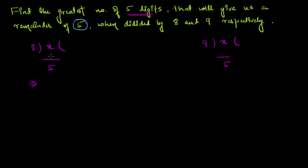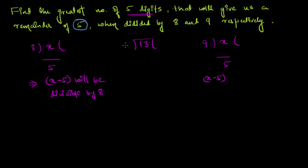This means that x minus five will be divisible by eight. To make it clear with an example: say I have the number 13 and I divide by three — three fours are 12, remainder is one. So 13 minus the remainder one, that is 12, will be divisible by three. The remainder tells us by how much the dividend is lagging in order to be divided by three. In the same way, x is lagging by five in order to be divisible by nine.